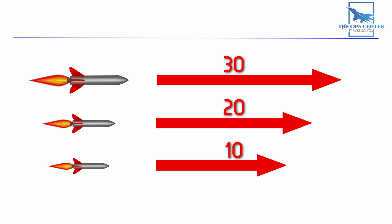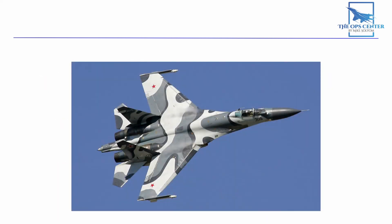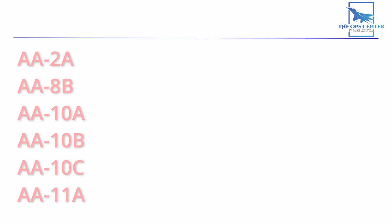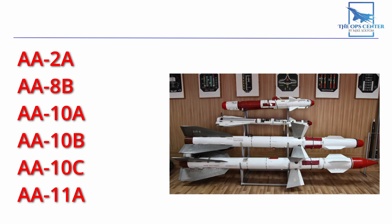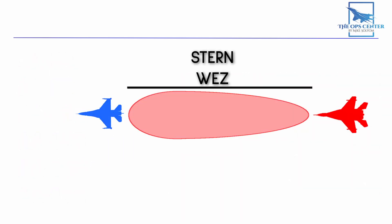So let's take a look at an example of how this would all work. In this scenario, we have an adversary nation that has the SU-27 Flanker as its most advanced counter-air platform. Here's the list of air-to-air missiles in their inventory. Of these, the AA-10C has the longest range. In DCS, this missile has a stern WEZ as shown here. 13 miles is the best case scenario here.